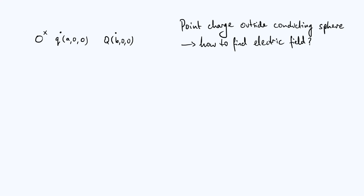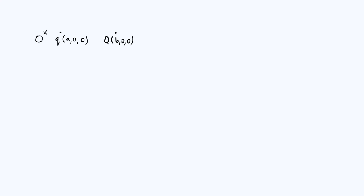Let's consider a related system where instead of a conductor we just have two point charges. We have a point charge of charge lowercase q with an x-coordinate of A, and another point charge with charge capital Q which has an x-coordinate of B. The charge on the right is equivalent to the charge outside the conducting sphere, and we're going to figure out how we should choose the lowercase q charge. To find the equipotential surfaces of this system we need to write down an expression for the potential as a function of coordinates x, y, and z.